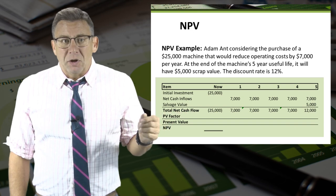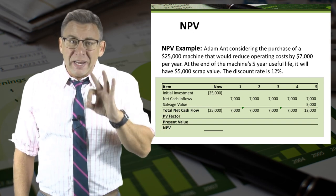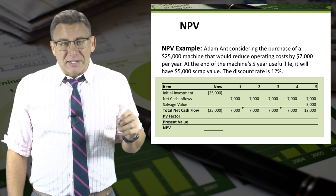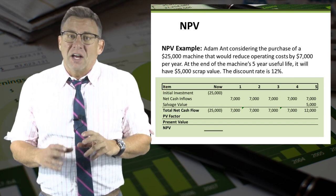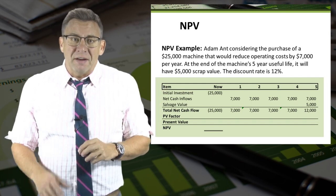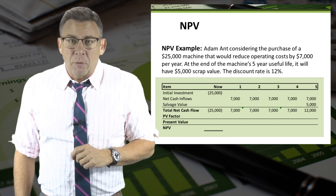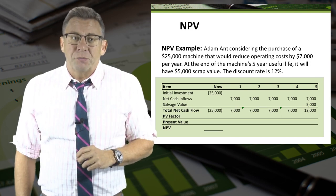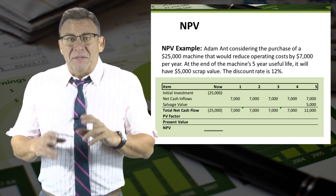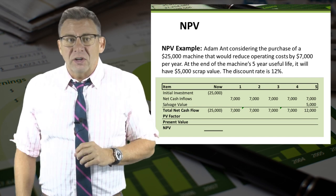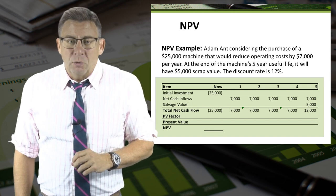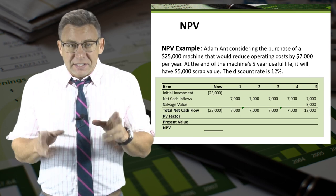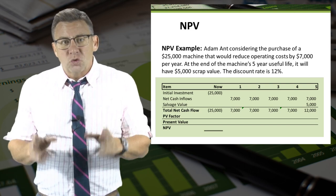Let's look at an example, and then I'm going to show you three ways to solve it. Adamant is considering the purchase of a $25,000 machine that would reduce operating costs by $7,000 per year. At the end of the machine's five-year useful life, it will have a $5,000 scrap value. The discount rate is 12%.